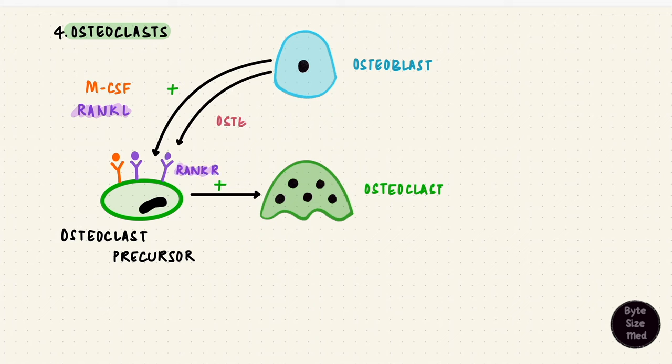Another cytokine is osteoprotegerin. Now this binds to the same receptor and stops the RANK ligand from binding to those cells and thus would inhibit pre-osteoclasts from becoming mature osteoclasts. It's thus also called the osteoclastogenesis inhibitory factor.